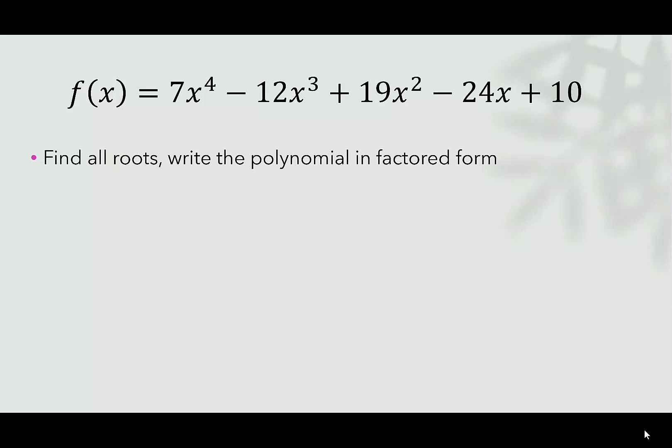So we're going to use f(x) = 7x^4 - 12x^3 + 19x^2 - 24x + 10. We want to find all the roots, and then we're going to write it in factored form. The very first thing I'm going to do is go over to Desmos and show you what this looks like.